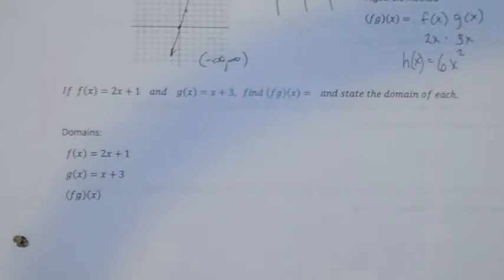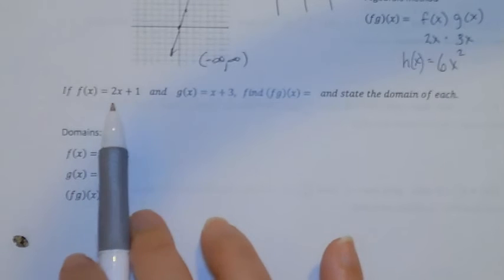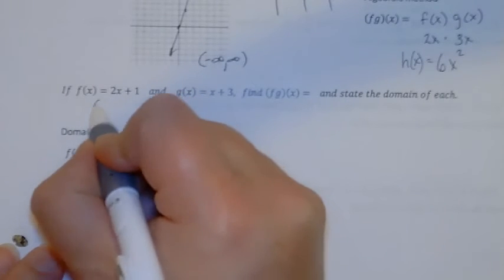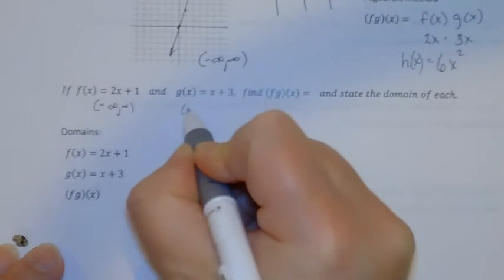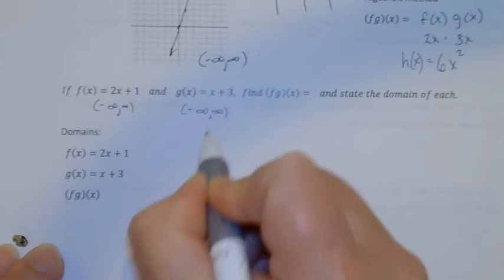I've got a function 2x plus 1. That's linear. So the domain would be negative infinity to infinity if I was asked. This one's linear, negative infinity to infinity.